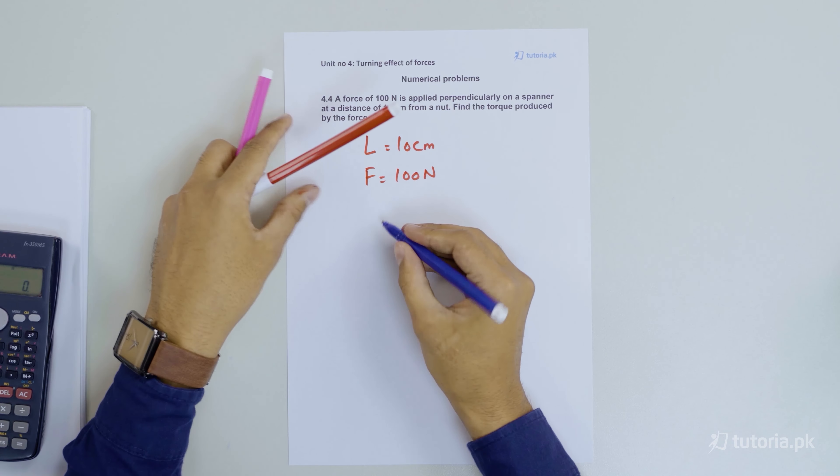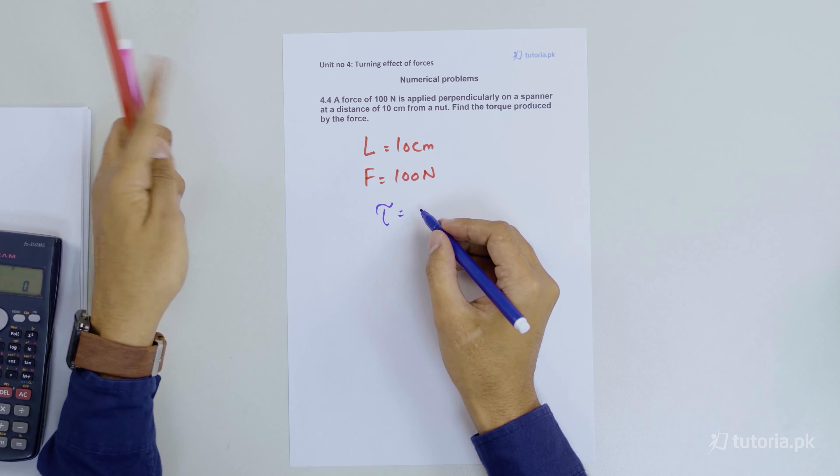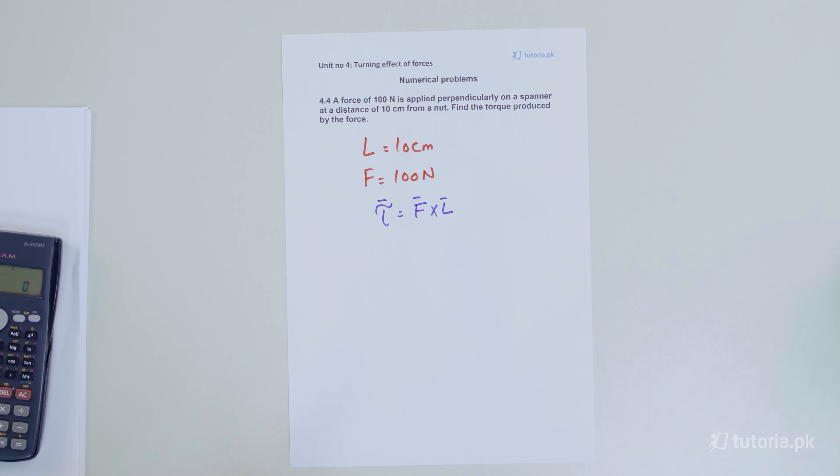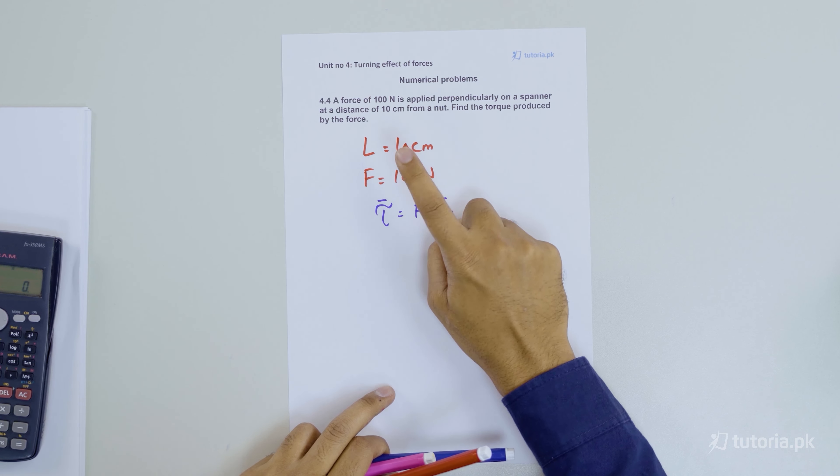You already know torque is equal to F cross L. F is 100 Newton and L is 10 cm.